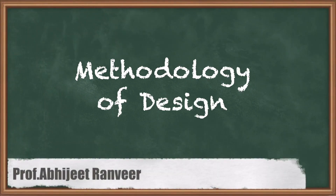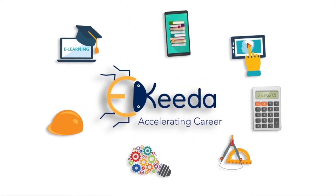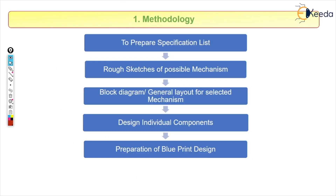Hello everyone. In this video we are going to study about the first module of design of mechanical systems, that is methodology and morphology. Specifically, we are going to study about what is the meaning of a methodology. In simple words, we can call it a method — how we can start preparing a particular product, device, or machine, and how we end it with the final print or offer.